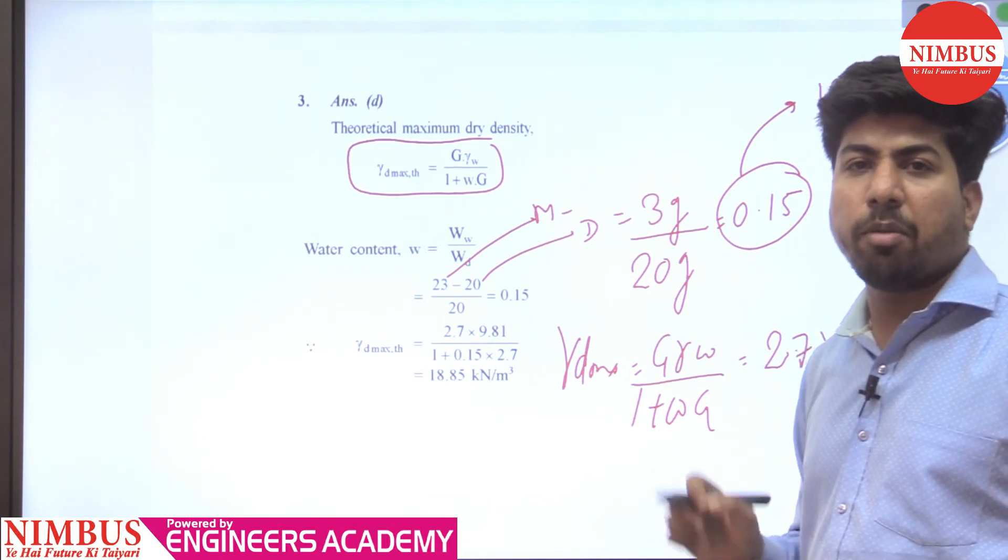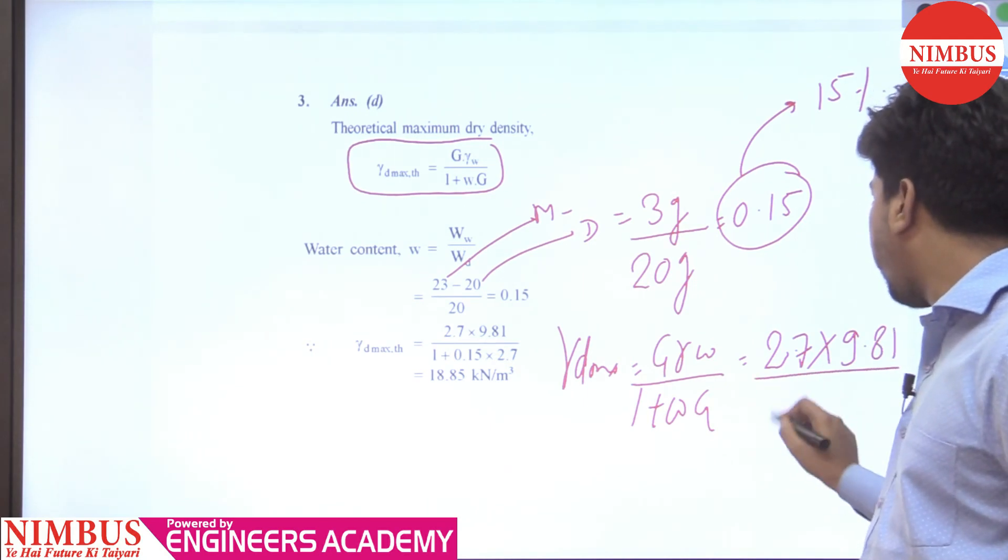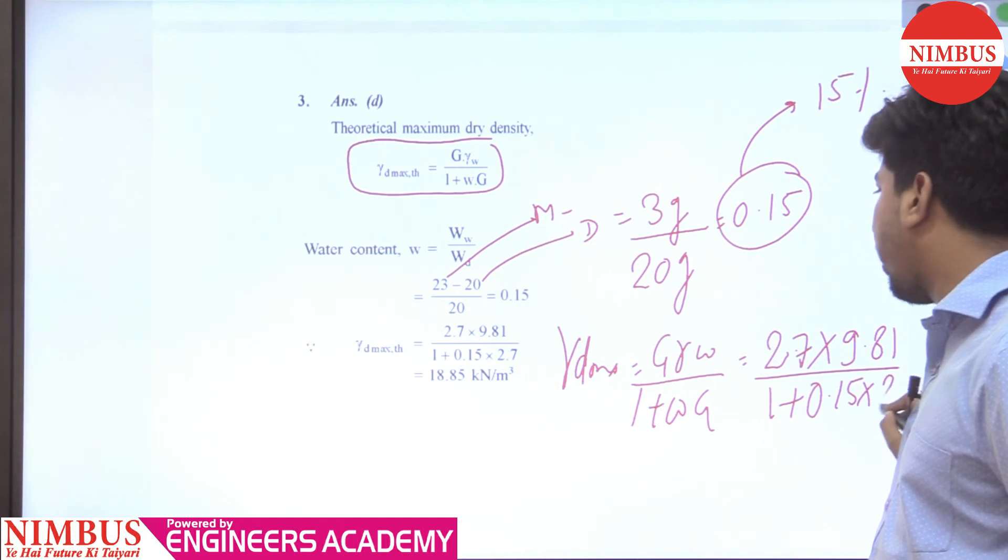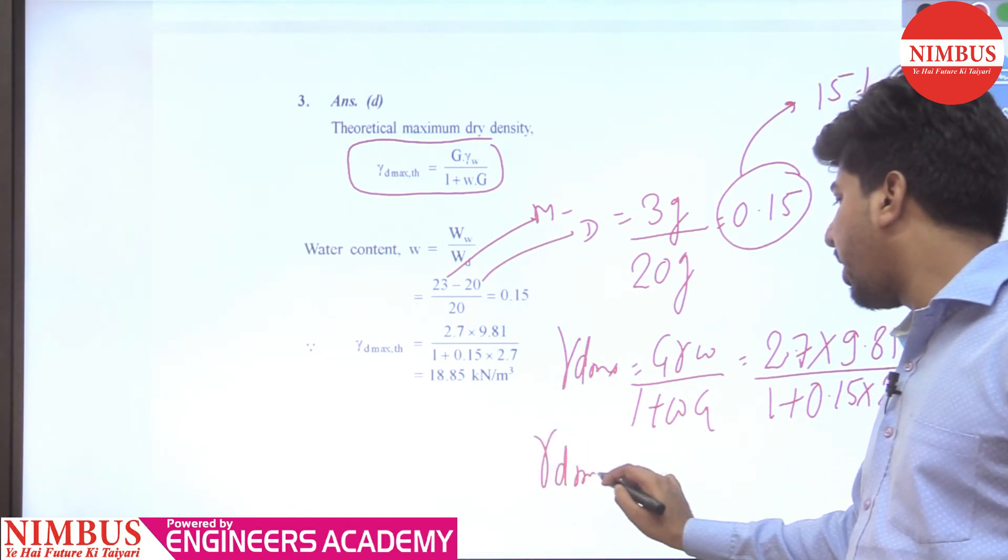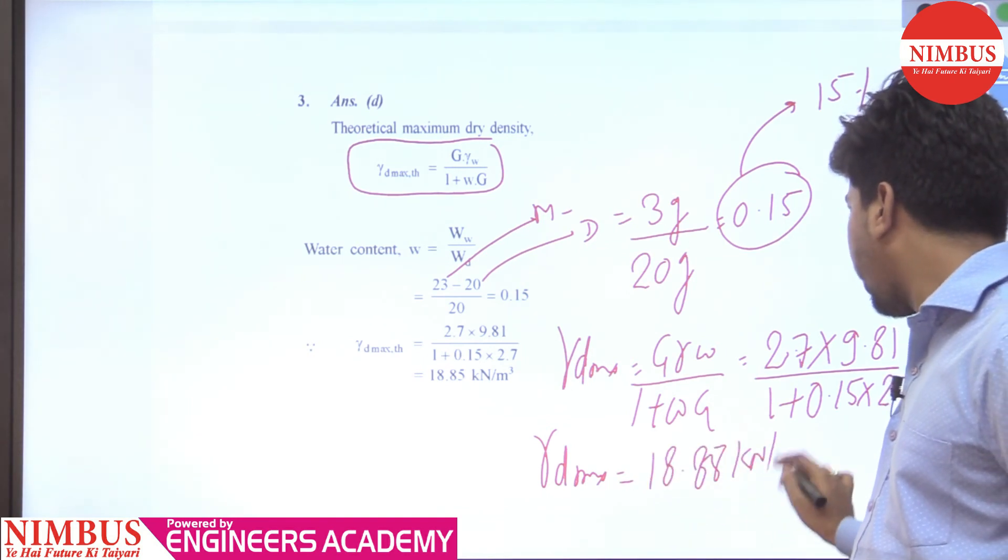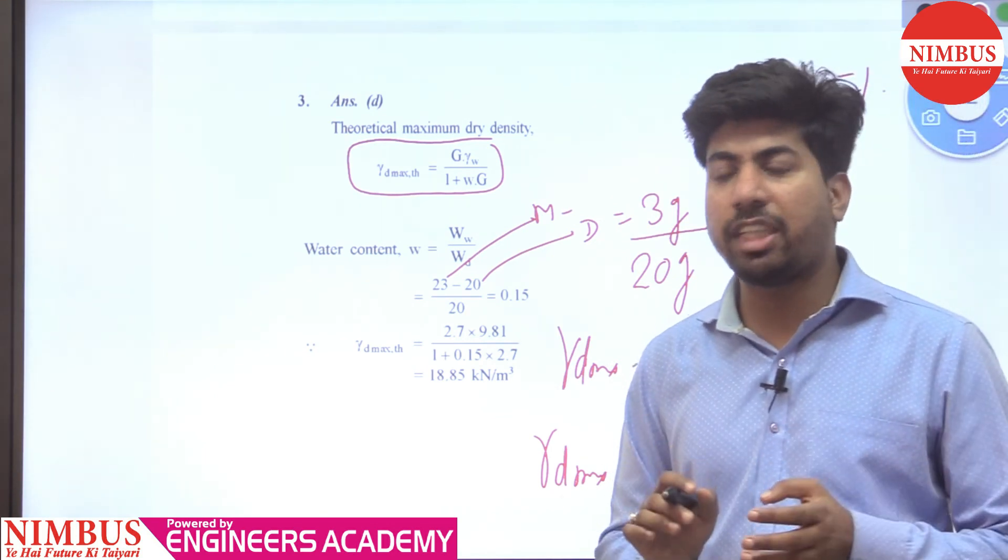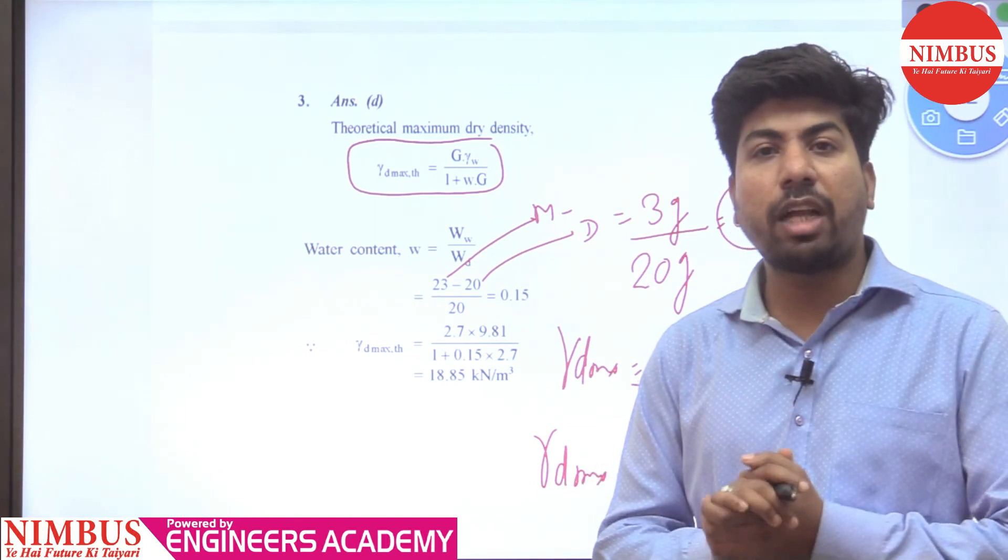G is 2.7, so 1 into gamma w kilonewton per meter cube. For gamma w we will take the value 9.81 kilonewton per meter cube. So 9.81 divided by... this gives us 18.65 kilonewton per meter cube. The gamma d maximum value is 18.85 kilonewton per meter cube.